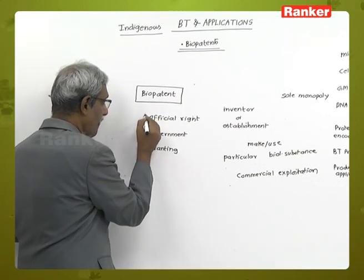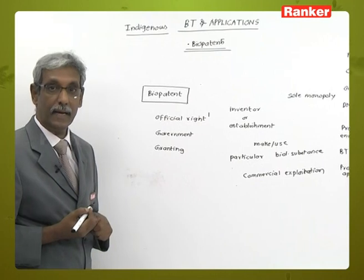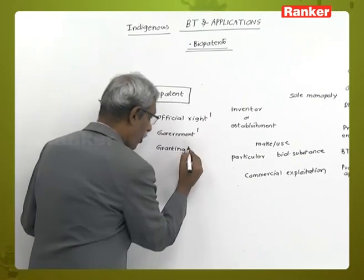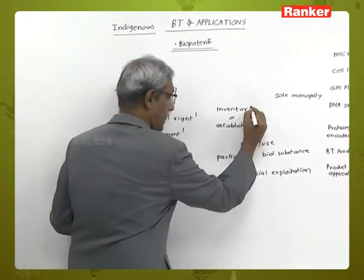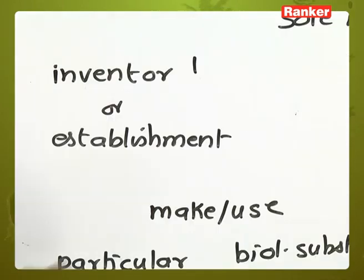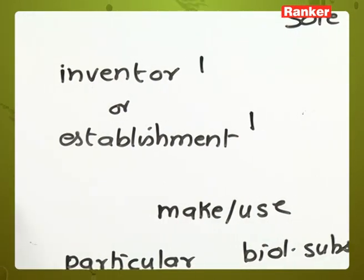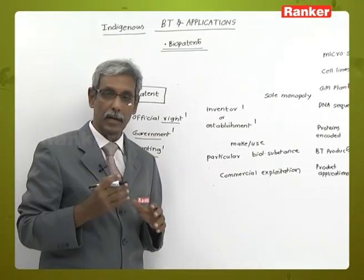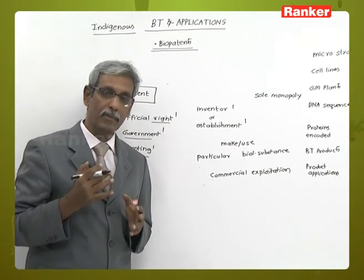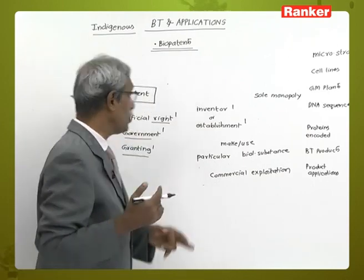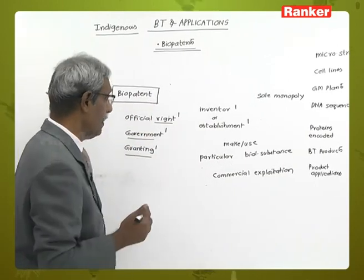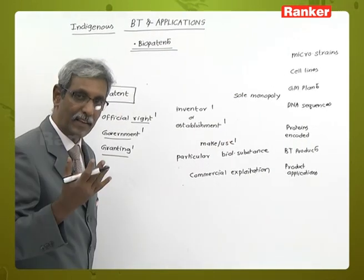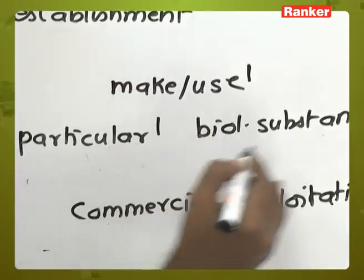A biopatent is an official right — a legal right given by the government, granted to the inventor or the establishment. If you are the original inventor or the person with the original idea, you have the right to patent whatever you have discovered. It is the right to make or use a particular bioresource.